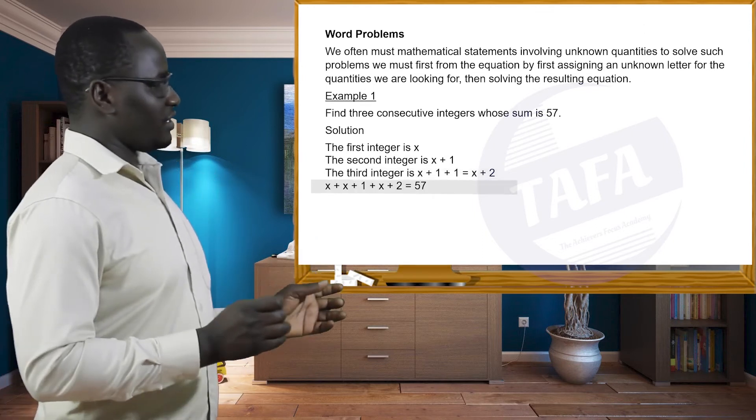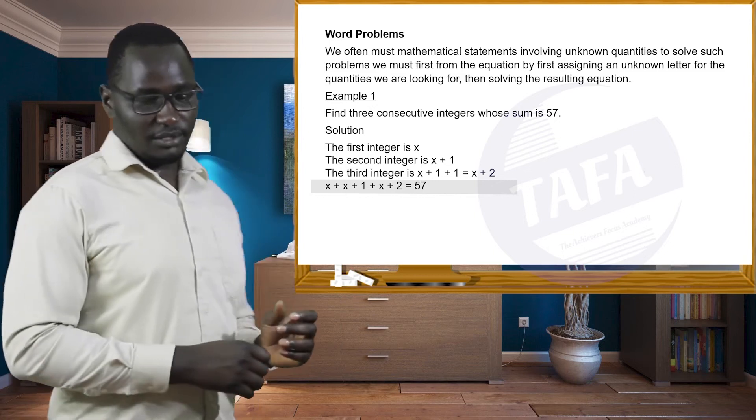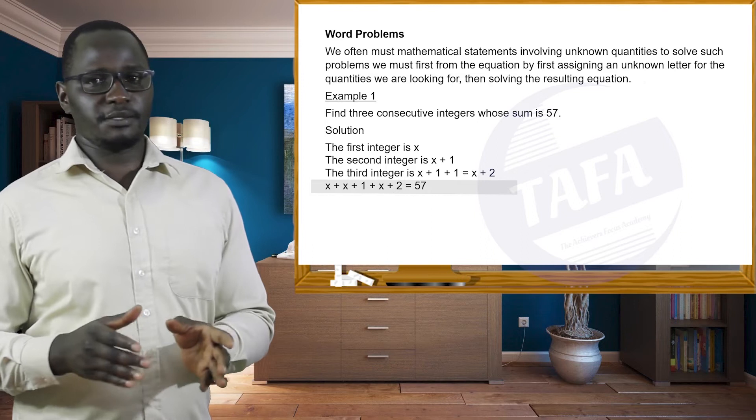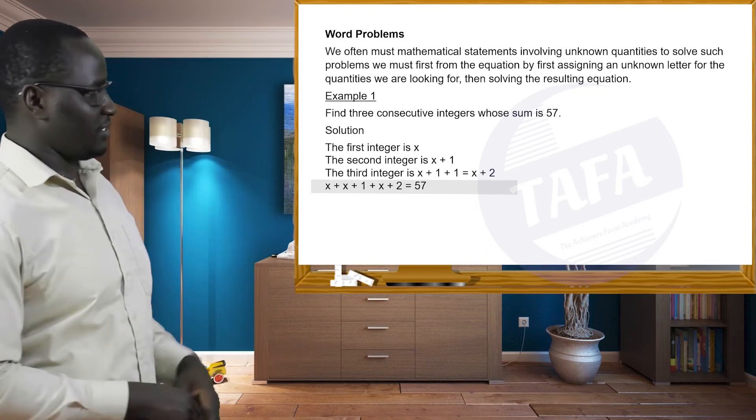Now the sum of this will give us 57. So it means we'll have x plus x plus 1 plus x plus 2 is equal to 57.